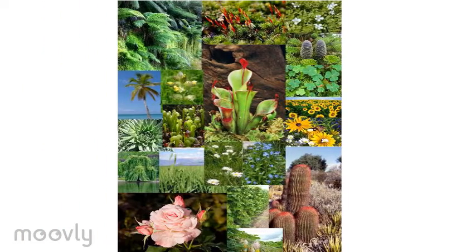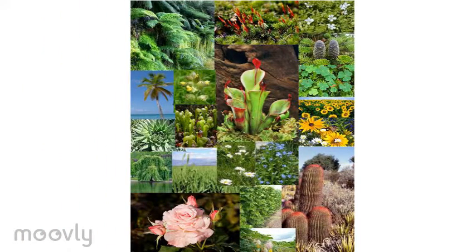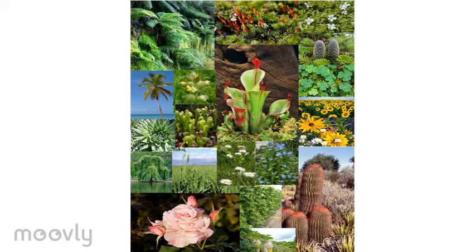Hello and welcome. Today we will be talking about the parts of a plant and their function. We'll start with the roots and then move on to the stem of the plant. After we are done with there, we will continue on to the leaves, followed by the flowers. To wrap up the lesson, we'll talk about the seeds.